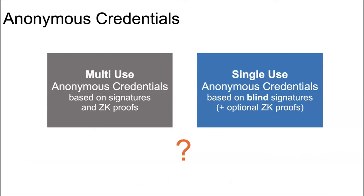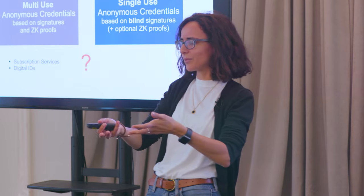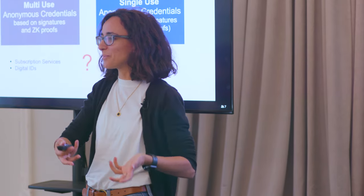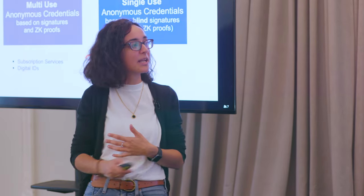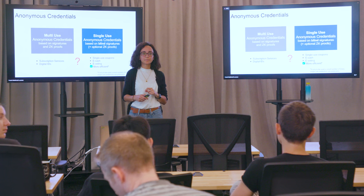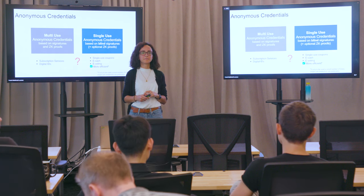Multi-use credentials are typically used in subscription service scenarios: you sign up once, get your credential, and use it multiple times. Single-use anonymous credentials are more natural for applications like single-use coupons, electronic cash, electronic coins, and electronic voting. The US also built a huge infrastructure for single-use credentials for vehicle-to-vehicle communications, arguing efficiency on the device. The main advantage is that they don't necessarily require zero-knowledge proofs during presentation — presentation is literally just verification of a signature, making them much more efficient.